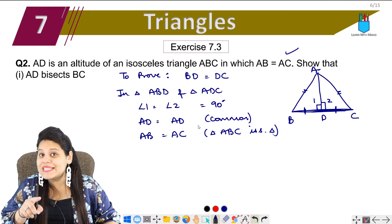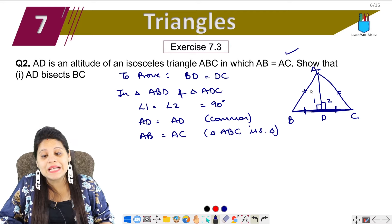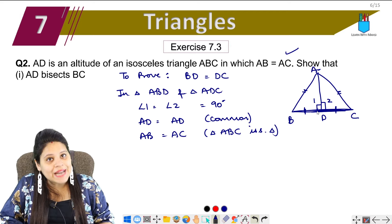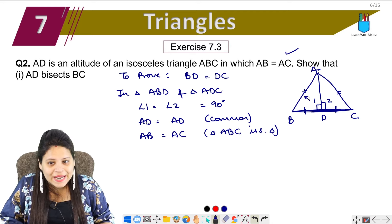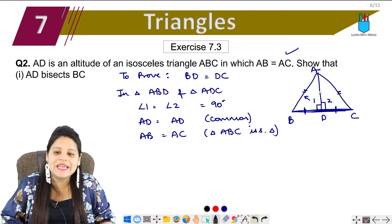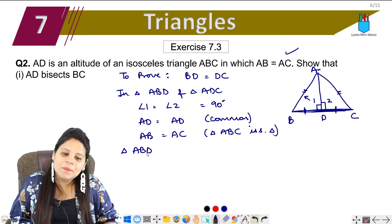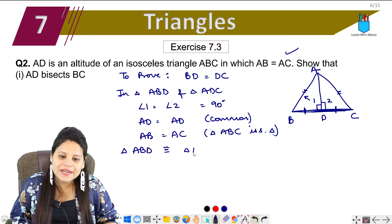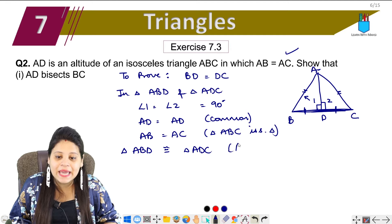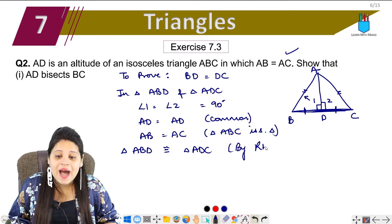So we have to find three things. Now which congruency rule here? Let's see. We have used one right triangle, we have used one hypotenuse, and one side. So I can say triangle ABD is congruent to triangle ADC by RHS congruency.